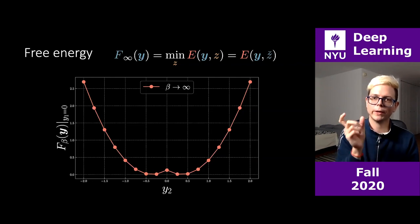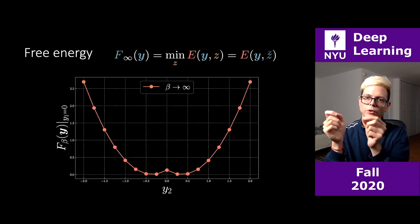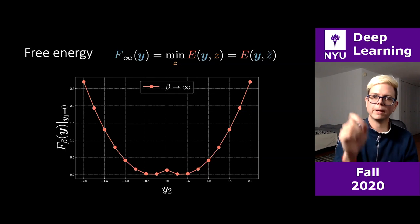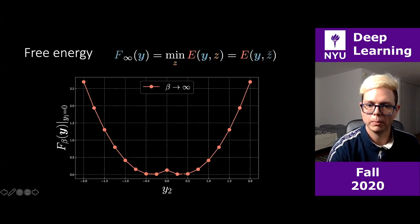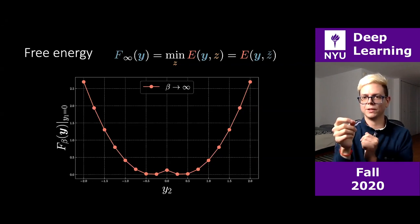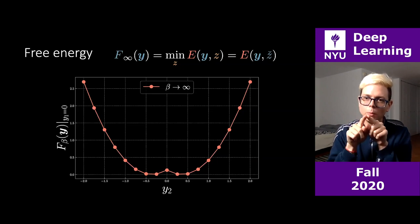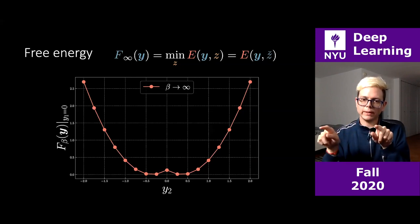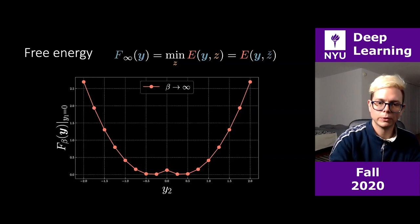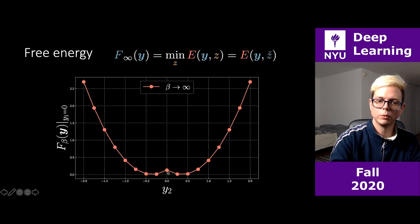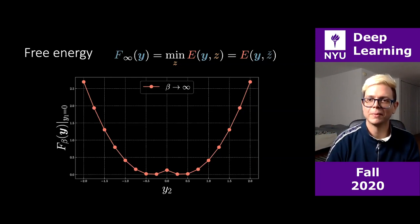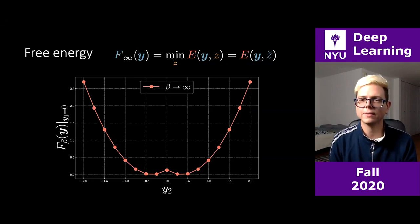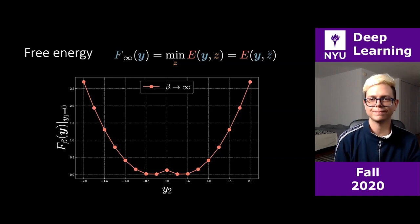The free energy is the squared distance from a given point to the closest point on the manifold. If you're on the manifold at location 0.4, the distance is zero. As you move linearly away, the free energy increases quadratically. Moving toward zero, you climb up a parabola and get that peak in the center.